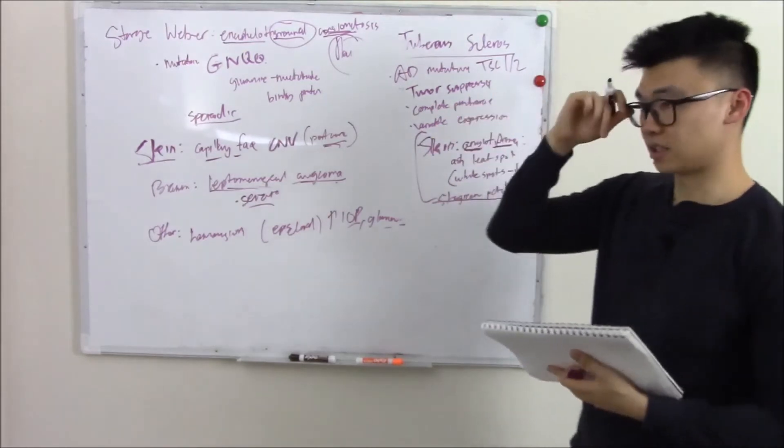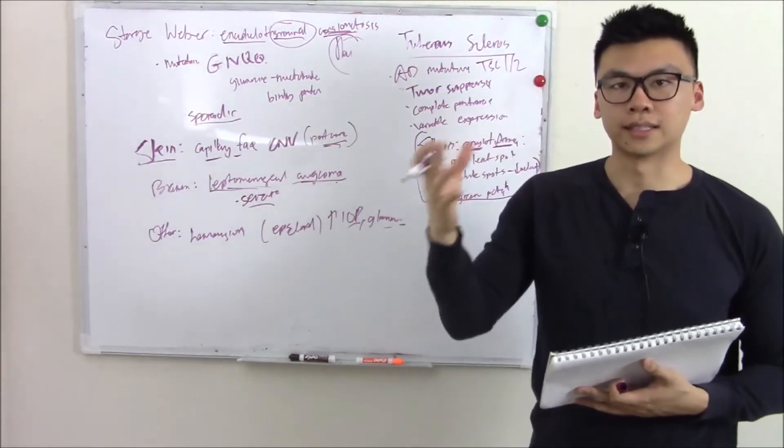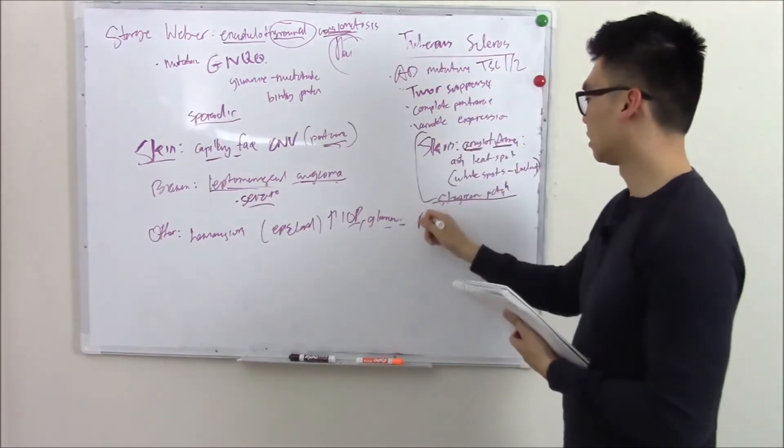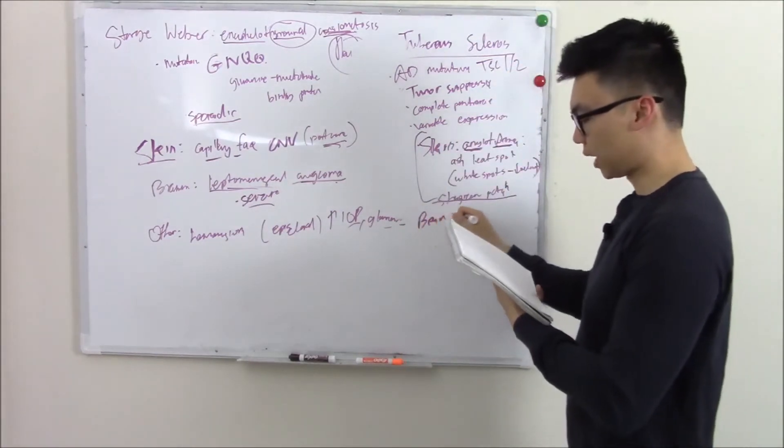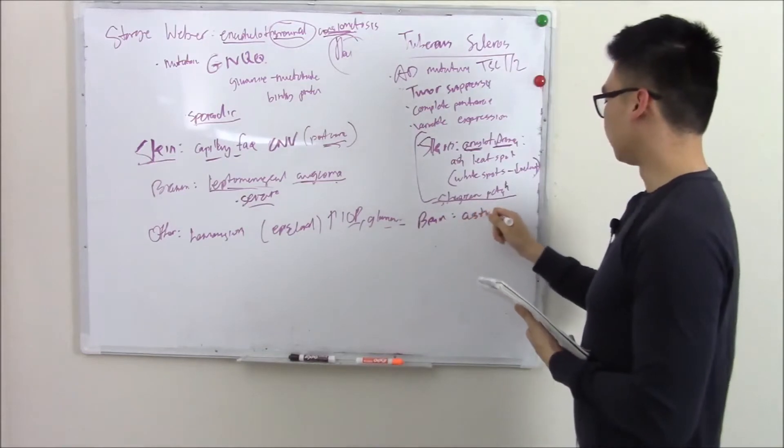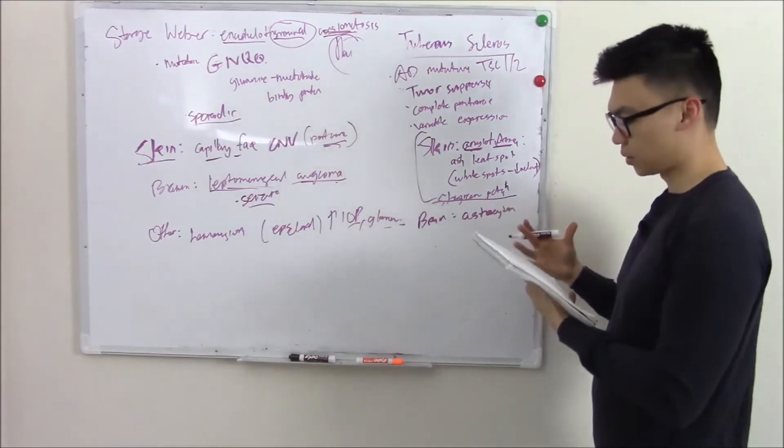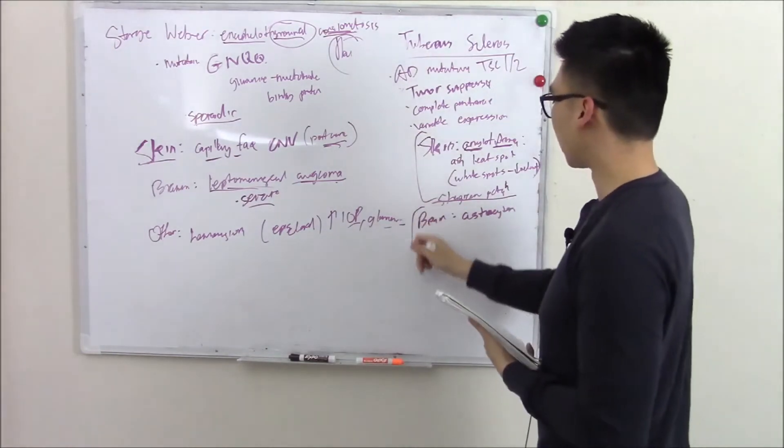These are all skin manifestations. You see these skin manifestations, you know there's something going on, a neurocutaneous disorder. Now what's going on in the brain? In the brain, astrocytoma, that's a big one, usually subependymal. Astrocytoma, you gotta know. That's the brain part.